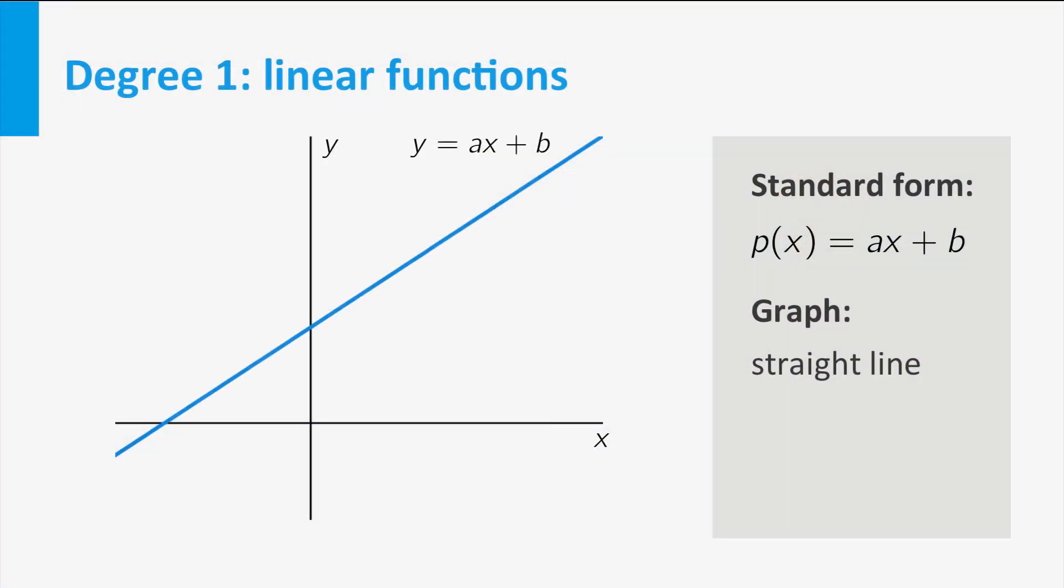If you consider the graph, the coefficients a and b actually have a meaning. a represents the increase of the function value if x increases by 1. As such, it is a measure for the steepness of the graph, called the slope. b is precisely the height of the intersection point of the graph and the vertical axis. It is called the y-intercept.